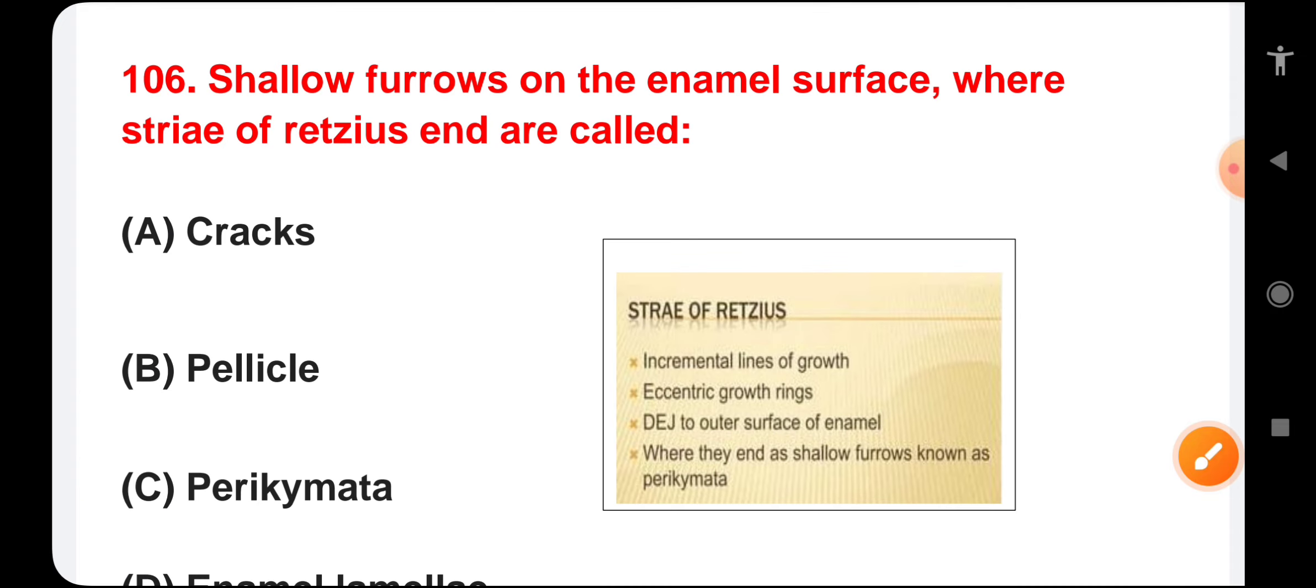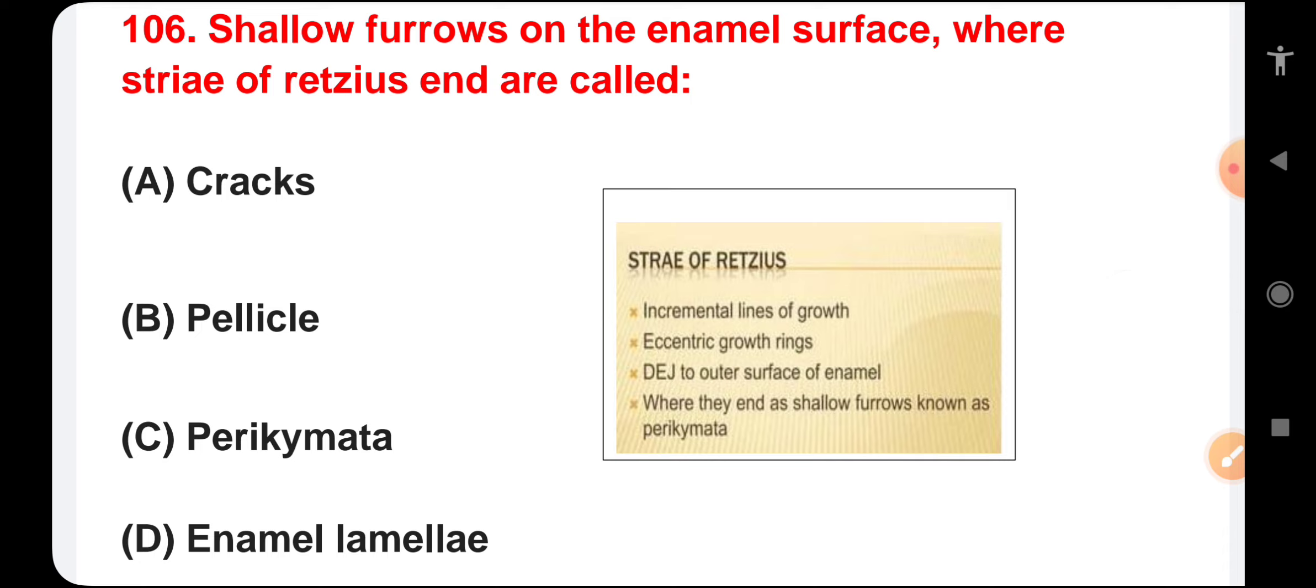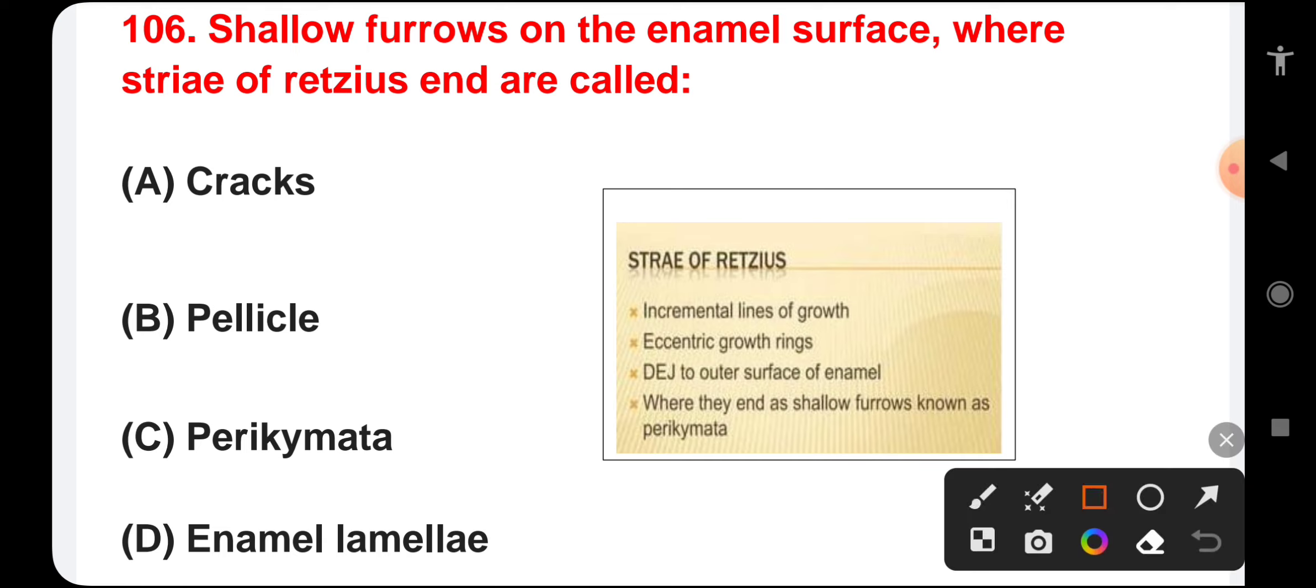Shallow furrows on the enamel surface where striae of Retzius end are called cracks, pellicle, perikymata, or enamel lamellae. Striae of Retzius are incremental lines of growth that start from the dentinoenamel junction to the outer surface of enamel. Where they end in shallow furrows, this is called perikymata.